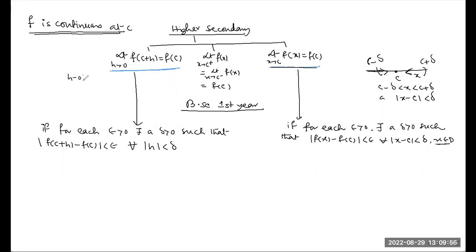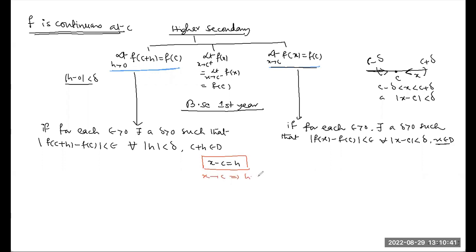Why not h less than delta? Because h minus 0 is 0, and x minus c equals h. If x tends to c, then h tends to 0. If c plus h is in the domain, c is in the domain, and c plus h is also in the domain. We substitute x minus c as h, so x becomes c plus h. Then x tending to c means h tending to 0, and h is introduced as the increment variable.